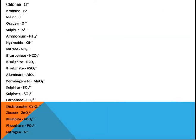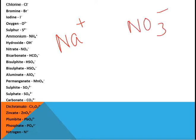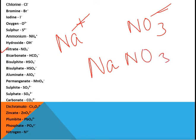Suppose you want to write the formula for sodium nitrate. For sodium we write Na⁺ and for nitrate ion we write NO₃⁻. The plus and minus charges are equal and opposite, so they cancel out, and we get the formula NaNO₃. This is our sodium nitrate.